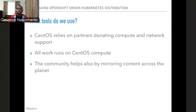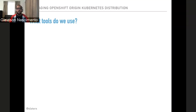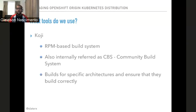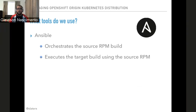We rely on partners donating compute, networking, and supporting time for us. We do everything on CentOS Compute and mirror stuff across the internet using the community. We use Koji, which is an RPM-based build system, also called CBS, and that builds against specific architectures that we support today. We also have Ansible, which we use to orchestrate the automation, and that's what we use to execute the target build against the source RPM that CBS builds.